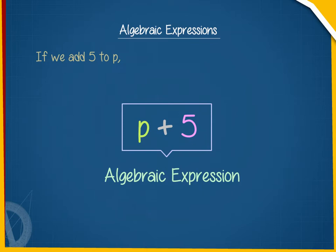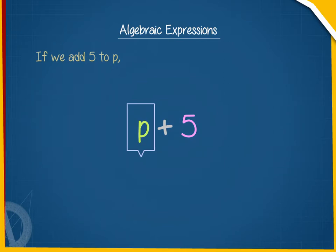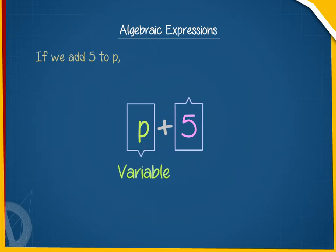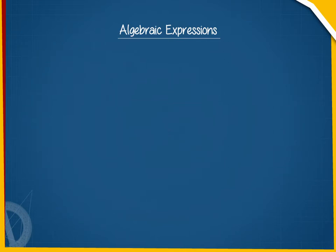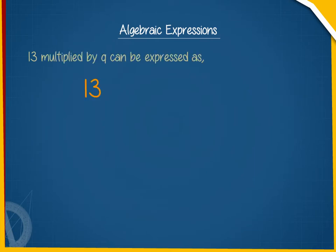An algebraic expression has variables and constants. Here, P is a variable and 5 is a constant. 13 multiplied by Q can be expressed as 13Q.